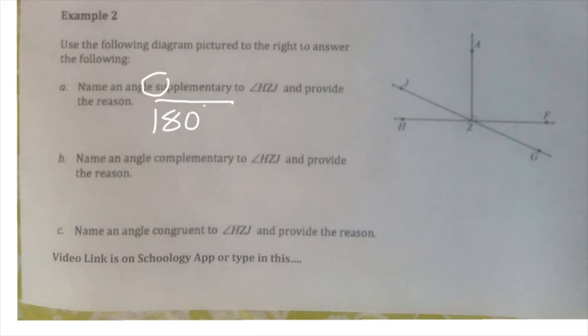Complementary forms a corner. The word complementary starts with a C and so does the word corner. And in a corner there's 90 degrees. And congruent means the same shape and the same size. One way to think of the word congruent is it's equal in measurement.